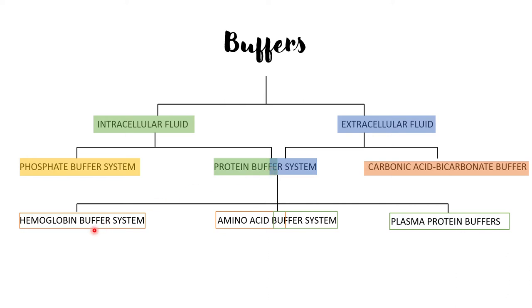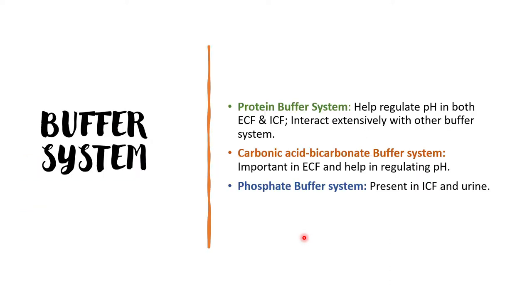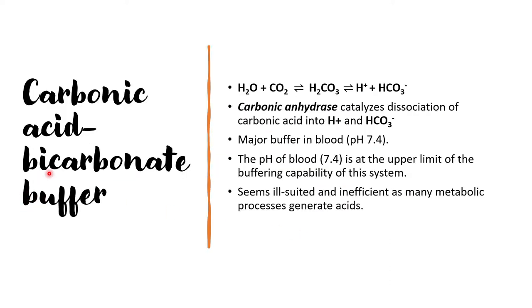In the protein buffer system, the hemoglobin buffer system is present for intracellular pH control and plasma proteins are there for extracellular pH control. There is also the amino acid buffer system which is present both intracellularly and extracellularly for the maintenance of pH. Now let's talk about the carbonic acid bicarbonate buffer, where an equilibrium is established in our system.